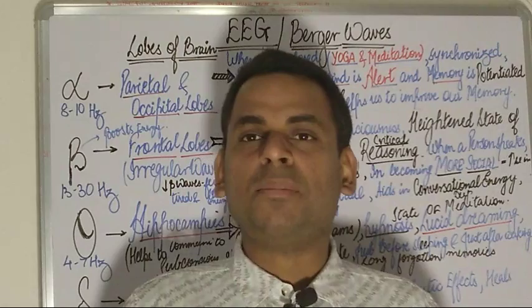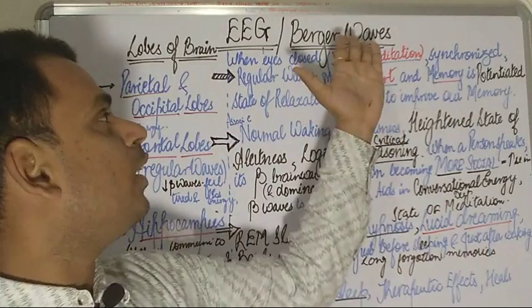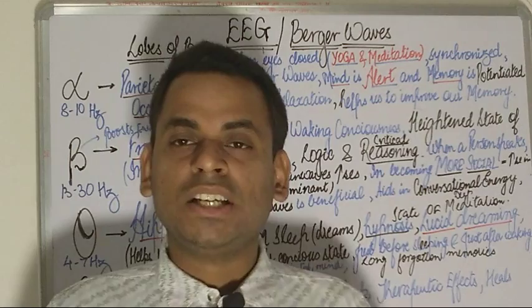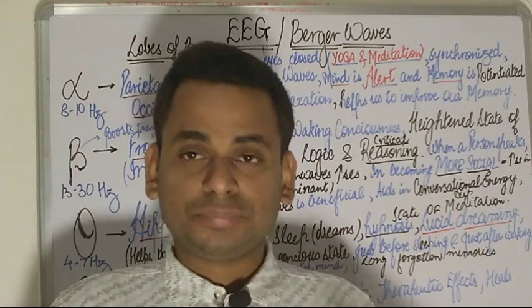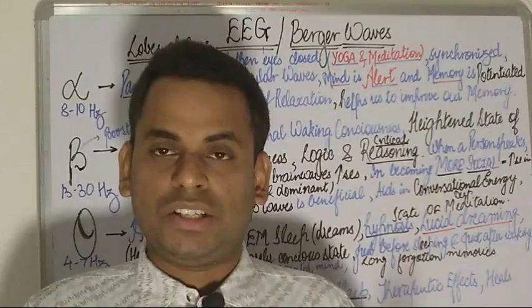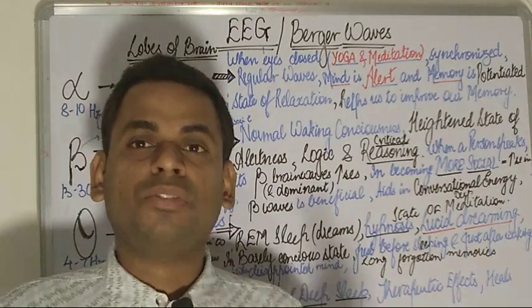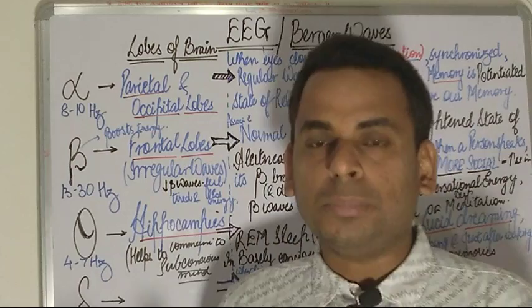Today the topic of my discussion will be about EEG waves, also called the Berger waves. They have been named so because it was the scientist Hans Berger who invented a device to look at the waves created by the brain. Hans Berger invented this device known as the electroencephalogram, which can record the frequencies produced by the human brain in different states of mind.